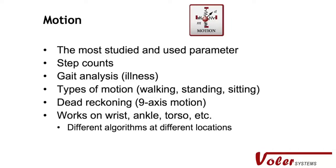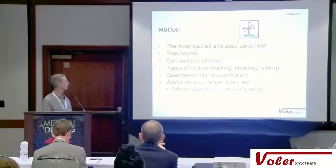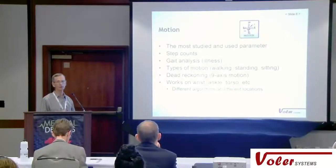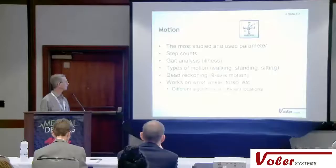Motion sensing has been very popular for a long time for step counts, but it measures a lot of other things. Algorithms provided by motion chip manufacturers let you measure gait, which is an indication of various types of illness. You can determine if somebody is standing, sitting, or walking with a device on the wrist or ankle. Dead reckoning is very helpful when you want to know where somebody is and which direction they're going — motion sensor chips with nine axes of motion detection can do that. They're good for short term; over time they lose accuracy, so if you need to know where somebody is for hours or days you need GPS. But GPS is power hungry, while these chips are very low power.